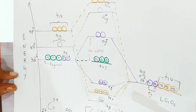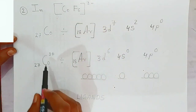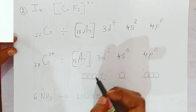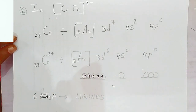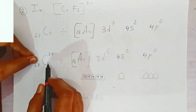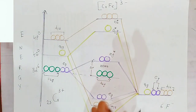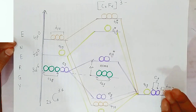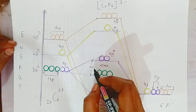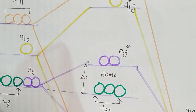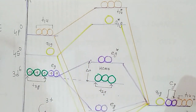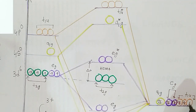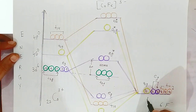Now, if the ligand is weak — as in hexafluorocobaltate(III), [CoF₆]³⁻ — something different happens. The electronic configuration of Co³⁺ is still 3d⁶, 4s⁰, 4p⁰. The six electrons are first distributed one by one across the d orbitals, then pairing begins. Fluoride is a very weak ligand, so the energy difference is very small — this is referred to as a HOMO situation. The six ligand group orbitals of fluoride are all filled with paired electrons.